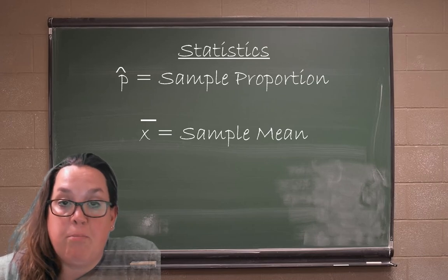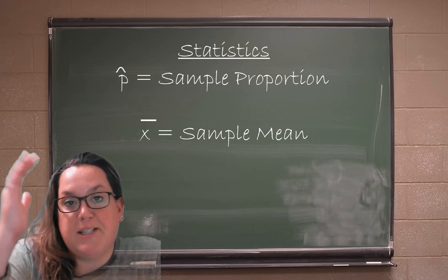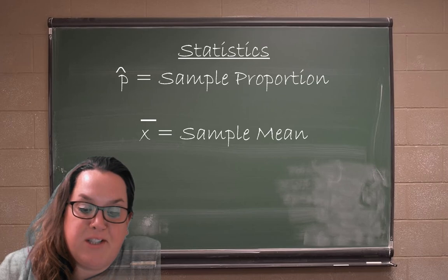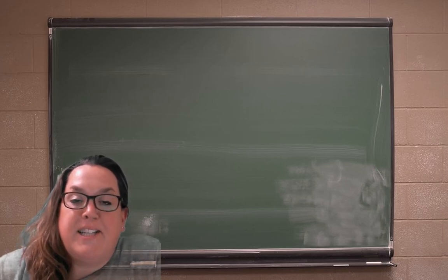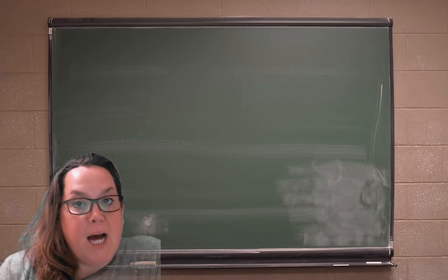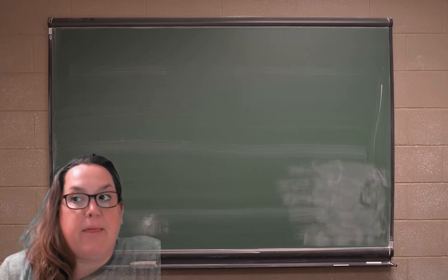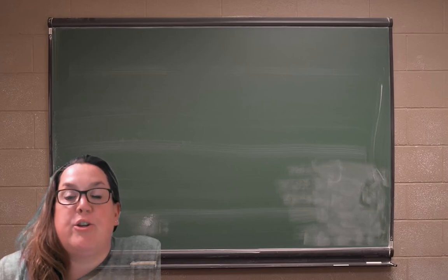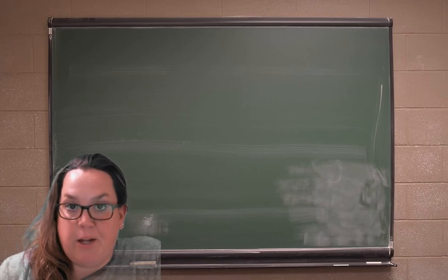Now one of the most important things you can realize in this chapter about sampling variability is that p and μ are not a moving target. They are what they are. They do not change for different samples.